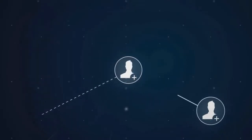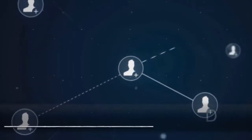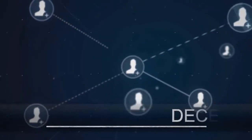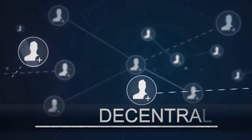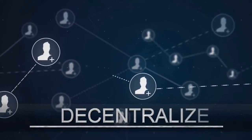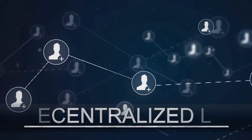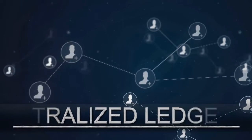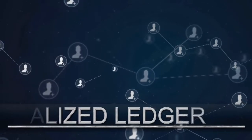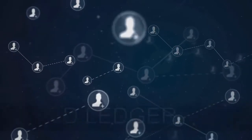This system of recording information across a global network is what we call decentralized ledgers. A decentralized ledger can be described as a ledger of any transactions or contracts supported by a decentralized network from across different locations and people, eliminating the need of a central authority.